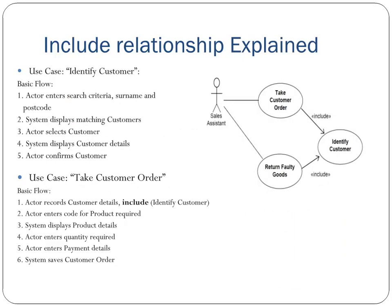Include relationship explained: when Use Case 'Identify Customer' basic flow is — actor enters search criteria (surname and postcode), system displays matching customers, actor selects customer, system displays customer details, actor confirms customer. When Use Case 'Take Customer Order' basic flow includes: actor records customer details (include), actor enters code for product required, system displays product details, actor enters quantity required, actor enters payment details, system saves customer order.